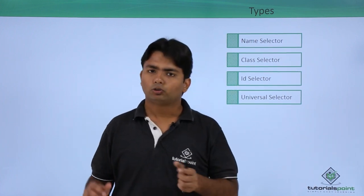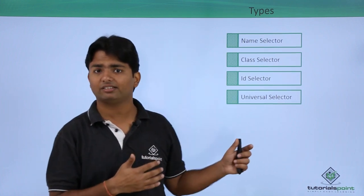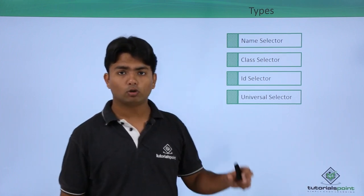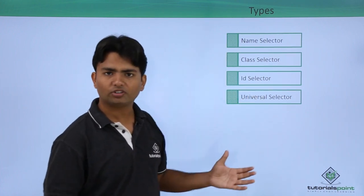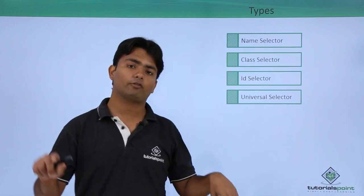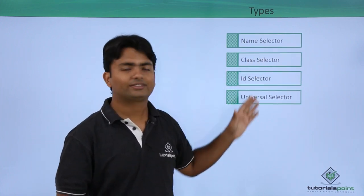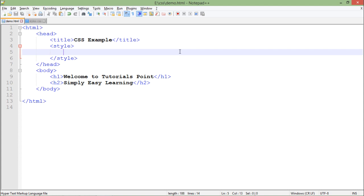The ID selector holds styles for a single element, since you cannot have multiple IDs with the same value on the same web page. The universal selector applies styles to the complete DOM. Let's get started with the practical implementation using an embedded style sheet so the styles and tags are visible on the same page.